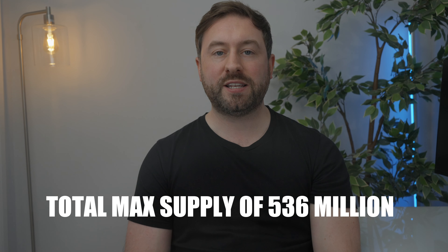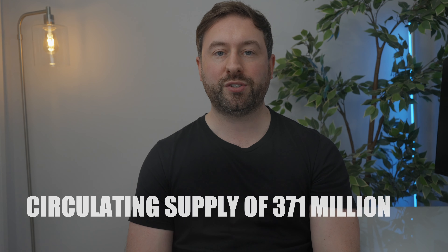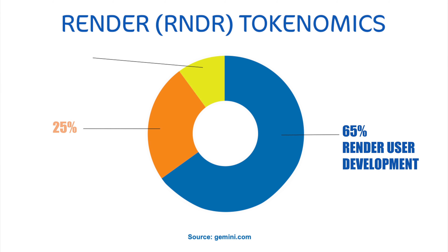The Render network was launched with a total max supply of 536 million tokens and has a current circulating supply of around 371 million tokens. The Render token is primarily used as currency to pay transaction fees on the network. The initial distribution of Render tokens is as follows: 65% is allocated to Render user development, 25% is allocated to the token public sale, and 10% is allocated to the Render reserve.